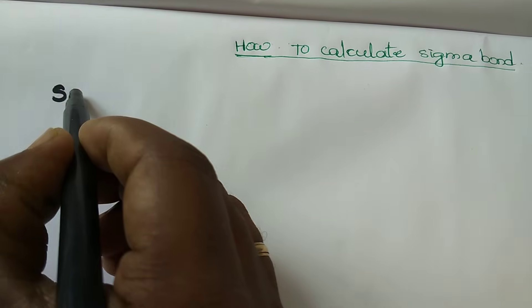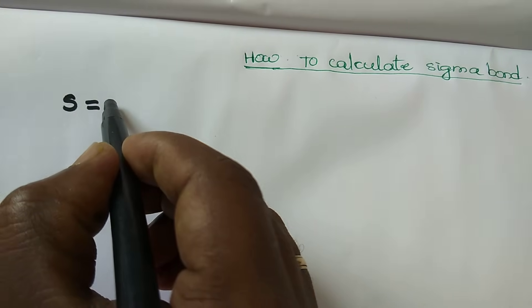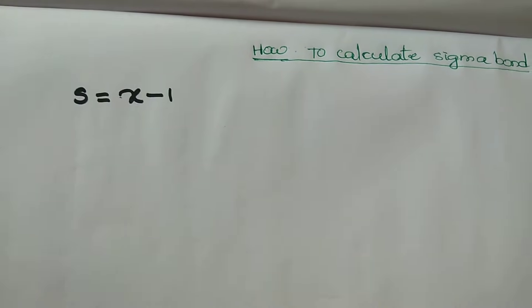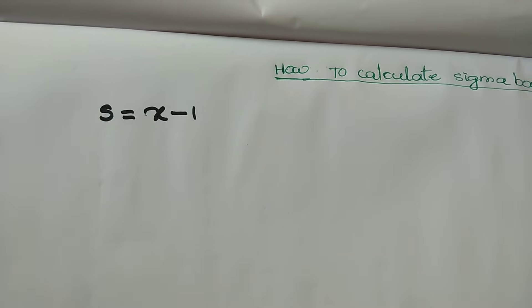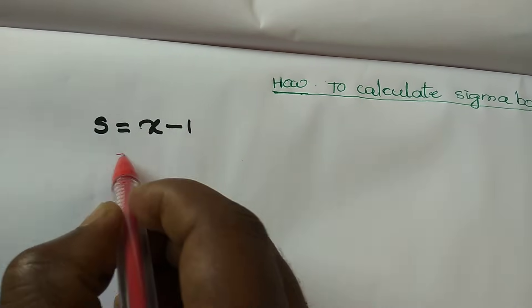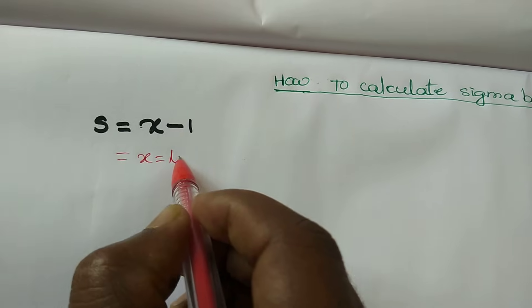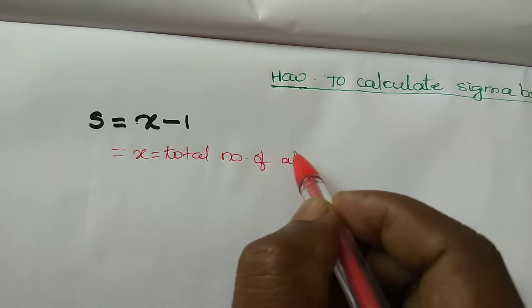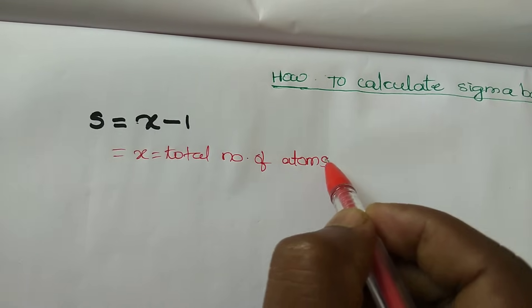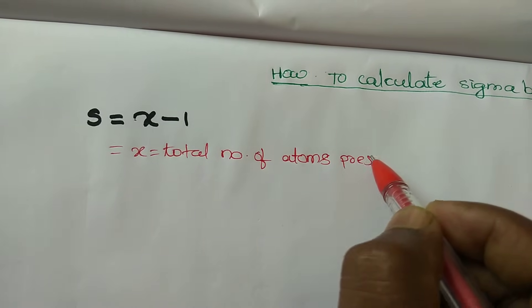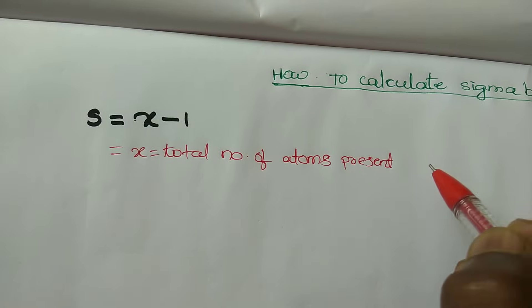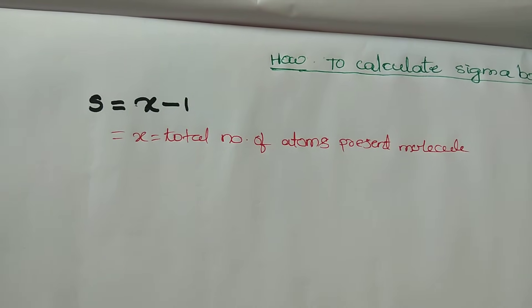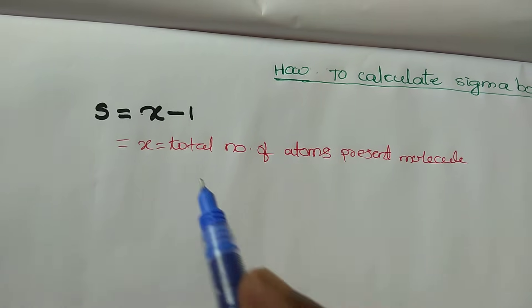The shortcut formula for sigma bonds is: sigma = x minus 1. Here, x is nothing but the total number of atoms present in the molecule.